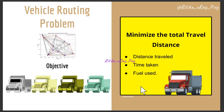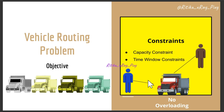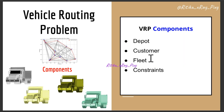In the Vehicle Routing Problem, we are trying to find the most effective routes for a number of vehicles to travel in order to deliver goods or services to a number of clients while satisfying certain constraints. The objective is to minimize the total route cost, which involves minimizing total distance, time traveled, and other factors, while satisfying constraints such as vehicles not exceeding their capacity and every customer being visited exactly once.